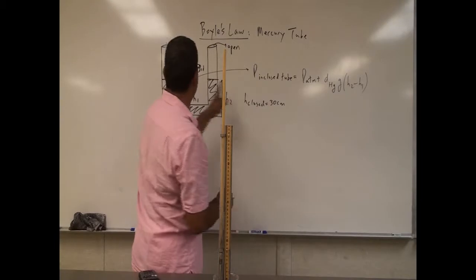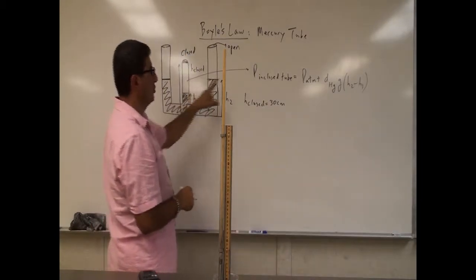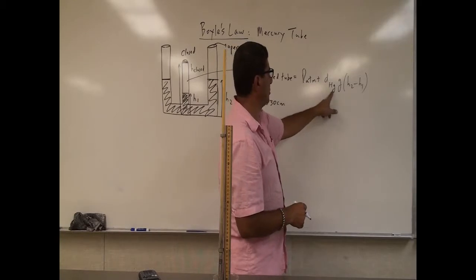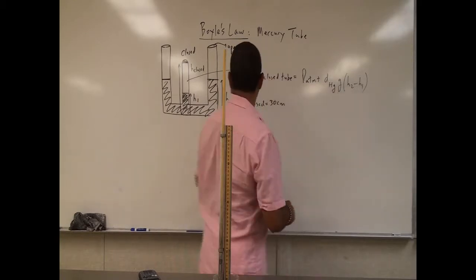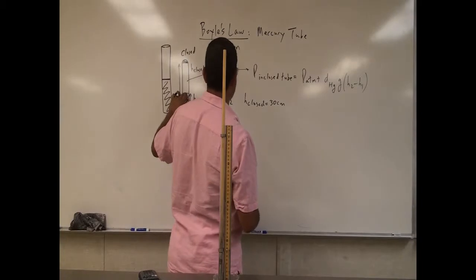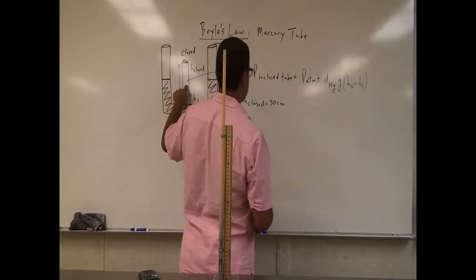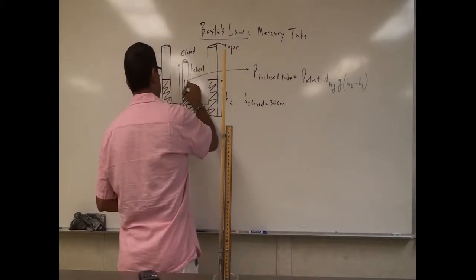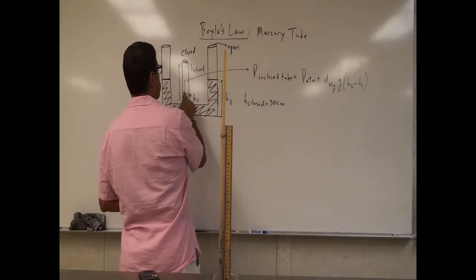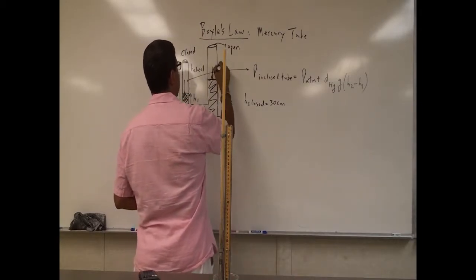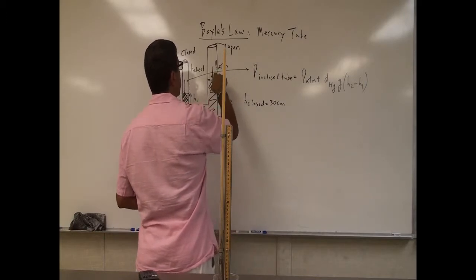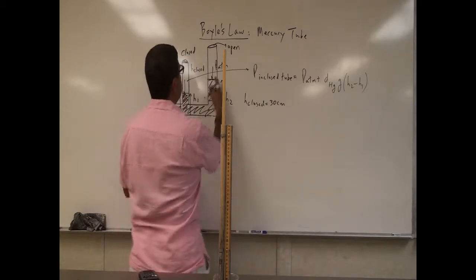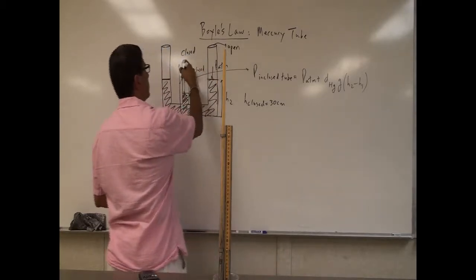The formula for the pressure inside of the closed tube is equal to the pressure of the atmosphere plus the density of mercury times gravity times the difference of the two heights. Since this height is bigger than that height, the pressure in here is larger than the atmospheric pressure — this pressure is pushing down on this mercury. Since it is larger than the pressure of the atmosphere pushing down on the open side, therefore this one goes down deeper. Because this is closed.